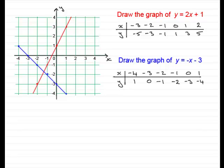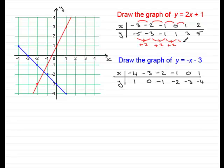Now if we look carefully at these graphs, let's go back to this one up here. As we go one unit across — from minus 3 to minus 2, minus 2 to minus 1 — notice what happens to the y values. From minus 5 to minus 3 goes up by 2 units. Minus 3 to minus 1: add 2 to minus 3 gives minus 1. Add 2 to minus 1 gives 1. Add 2 to 1 gives 3, and add 2 to 3 gives 5. So as we go one unit across, we gain two units in the y value.